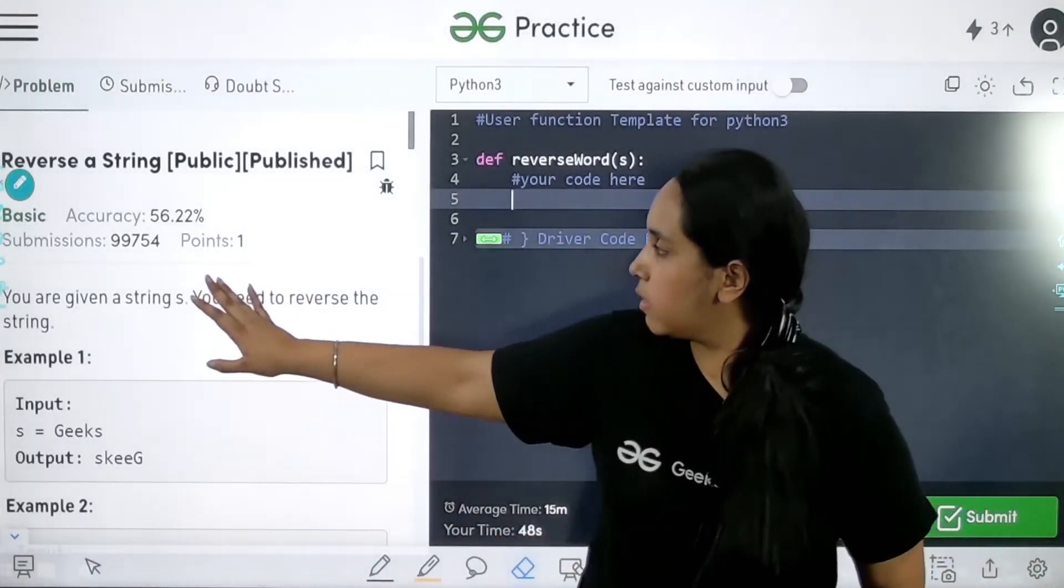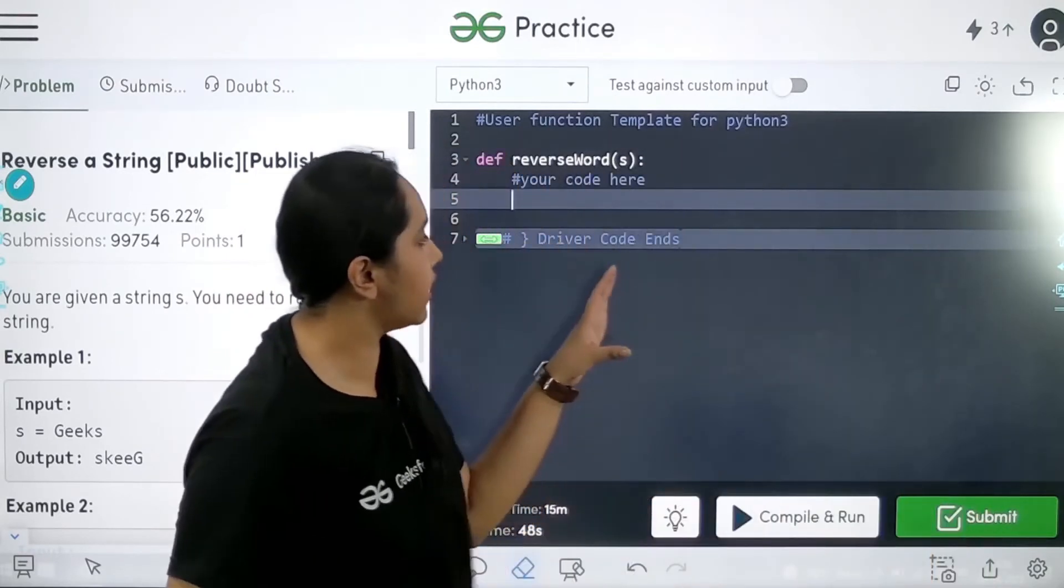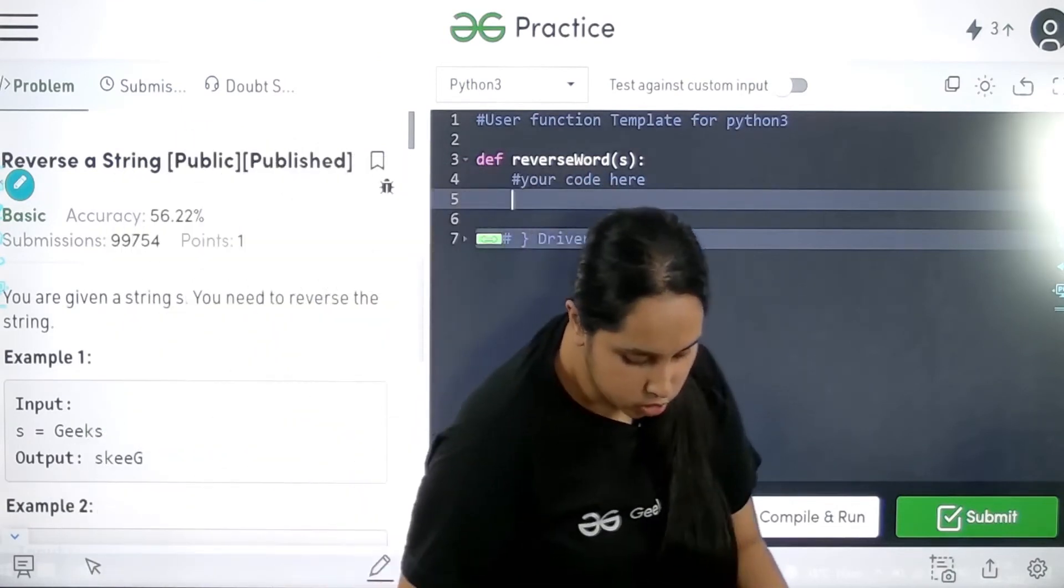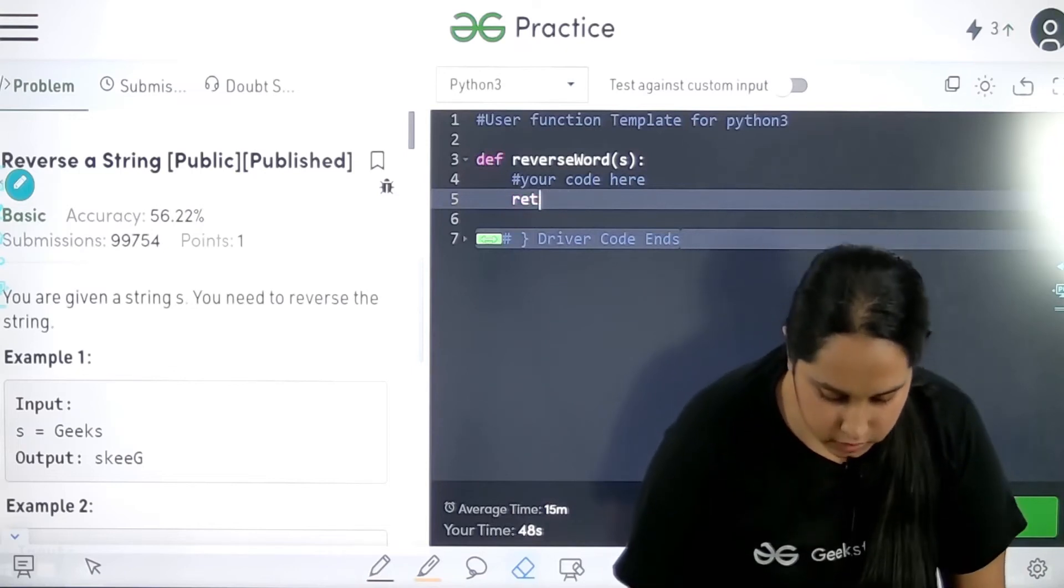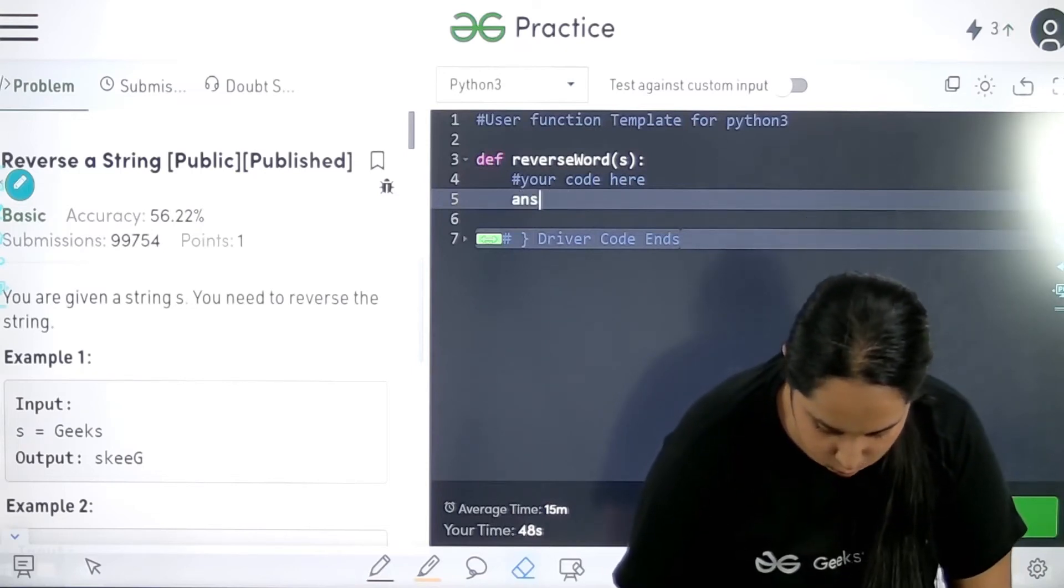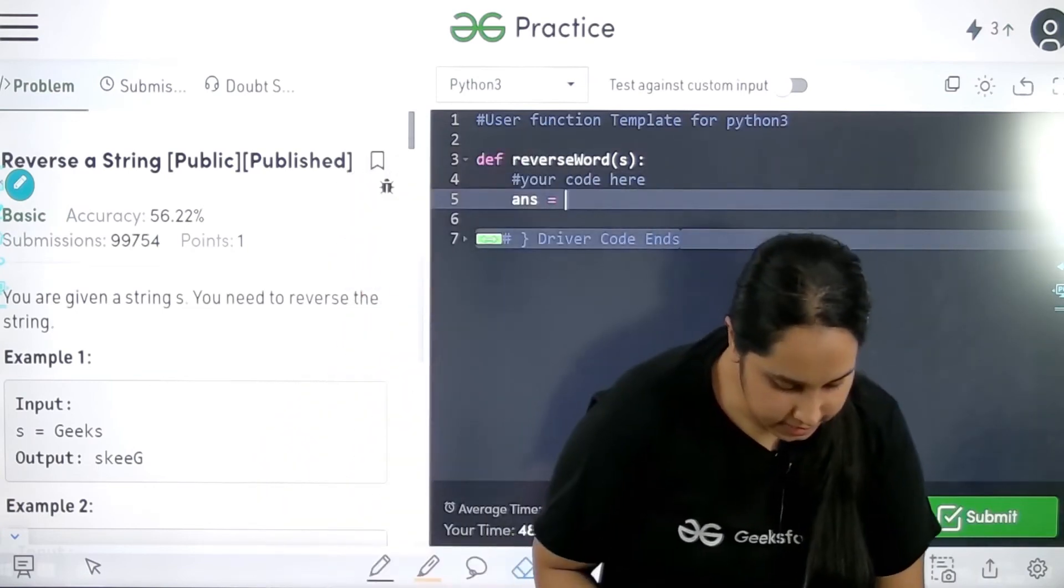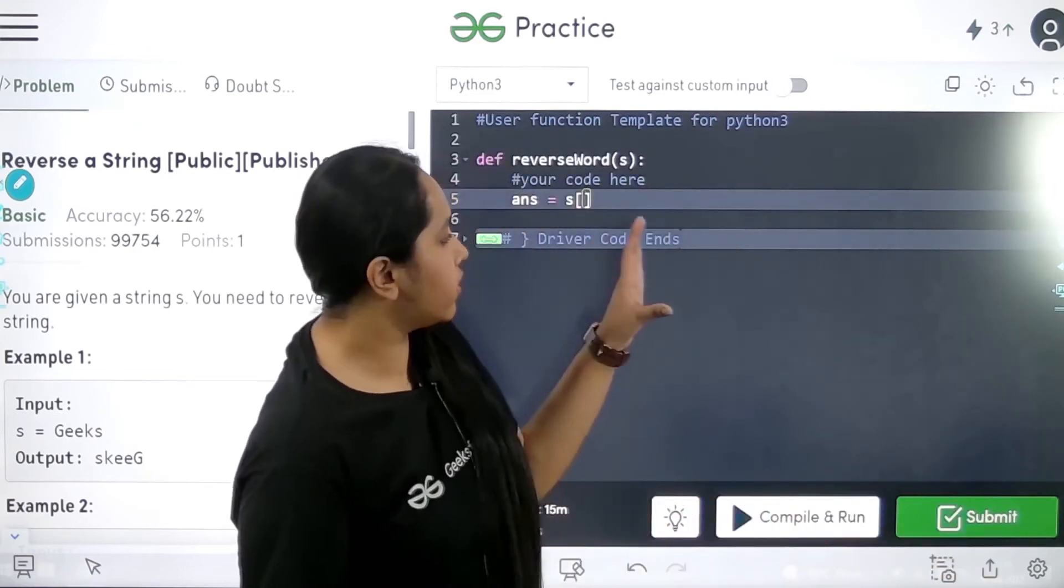Now see this is the problem. You are given a string, you need to reverse the string. So I would just directly use the slicing concept on the given string. I just need to write return. Now let us now do with return. I would just say answer equal to. In the answer I would just apply the logic of slicing. That is on S, on the string, I need to apply the logic of slicing.